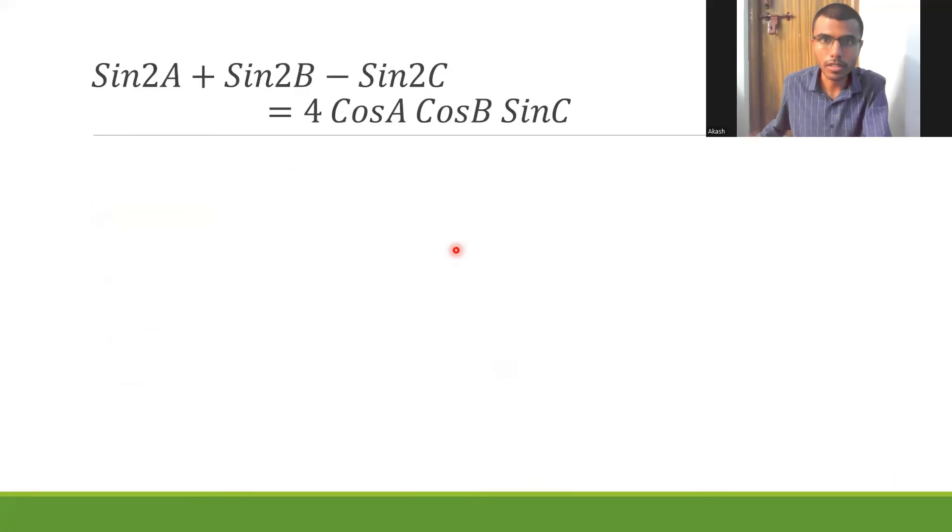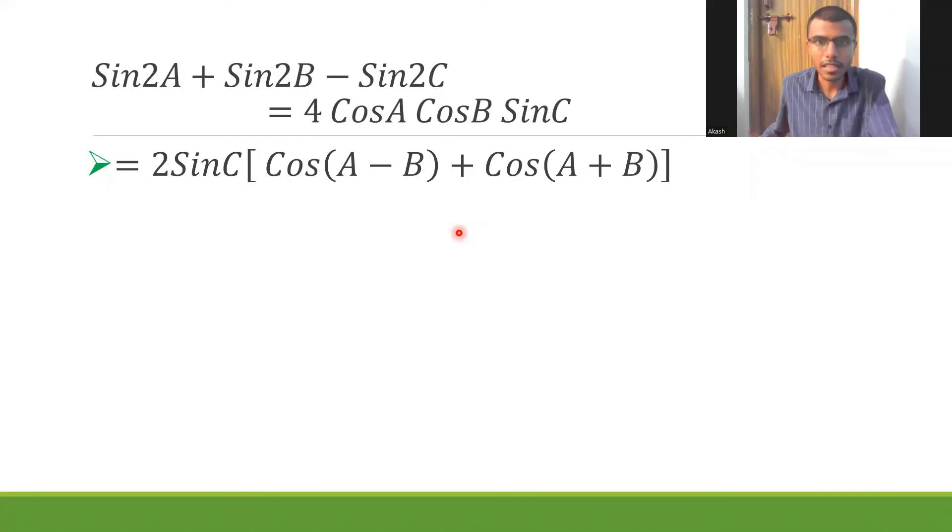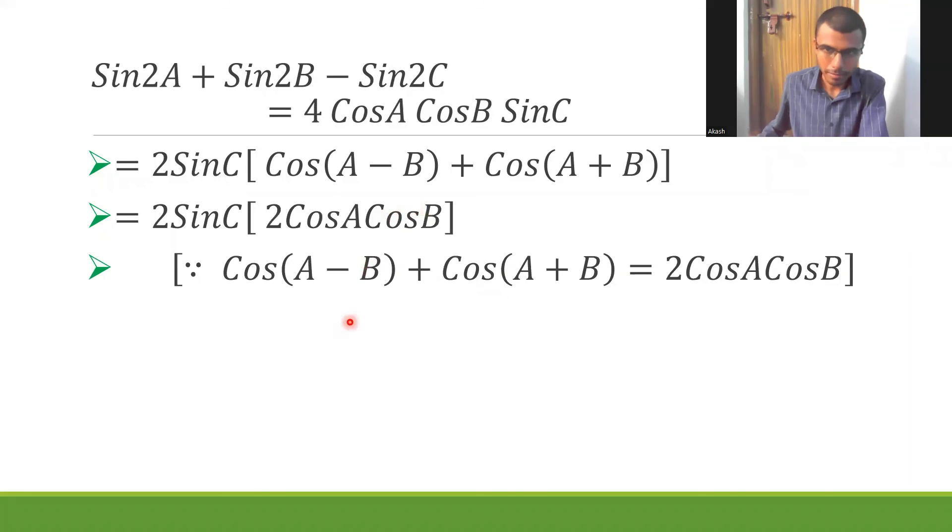This would be nothing but 2 sin C into cos (A minus B) plus cos (A plus B). Now cos (A minus B) plus cos (A plus B) is nothing but 2 cos A cos B, and you need to mention that. Here 2 sin C into 2 cos A cos B - that's it, we are nearing that. Just multiply 2 times 2 is 4 and arrange them in A, B, C order, so we have 4 cos A cos B sin C. That's it. Look at the top of the screen - this is what we had to prove and we have proved it.